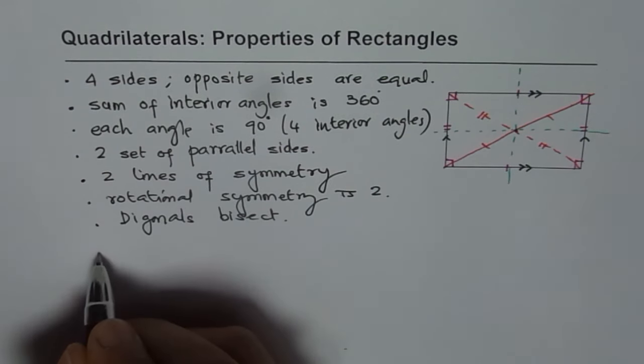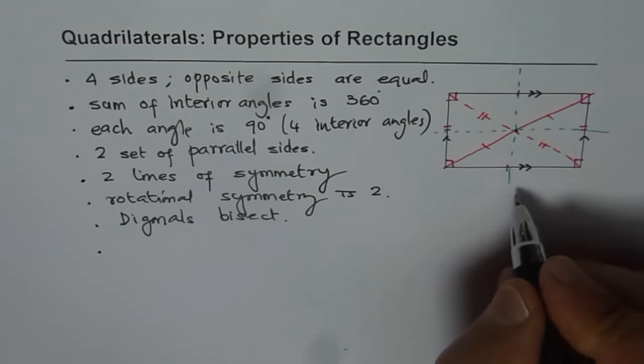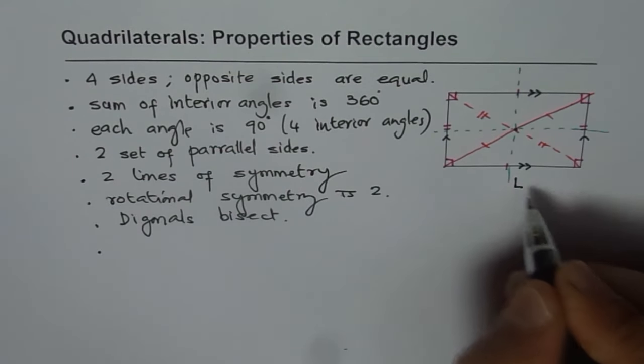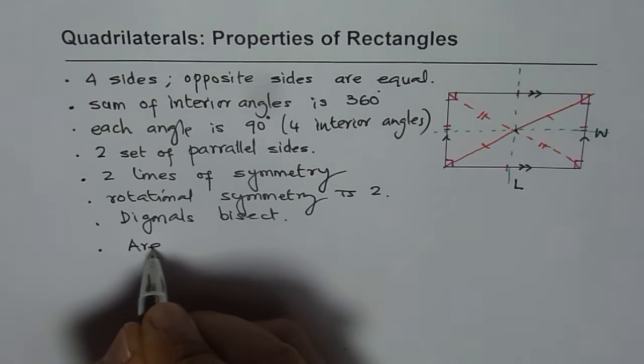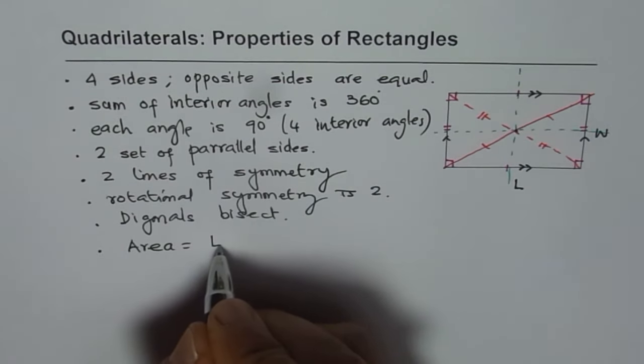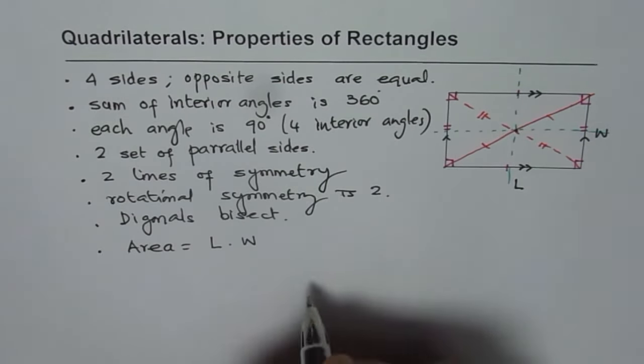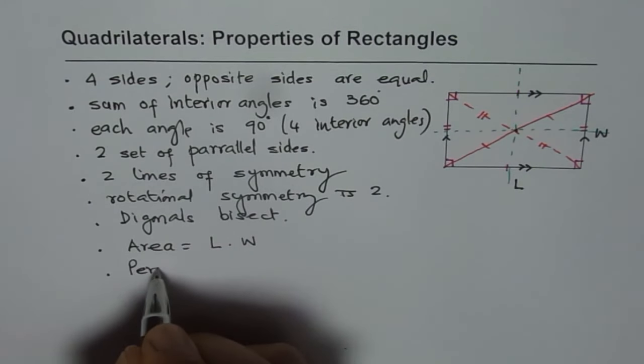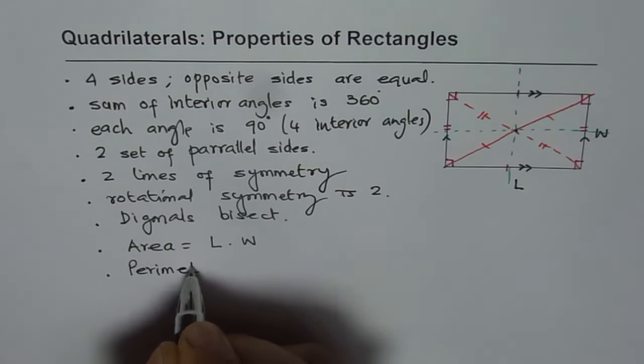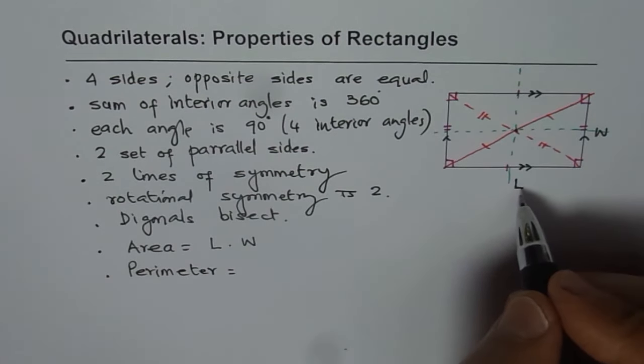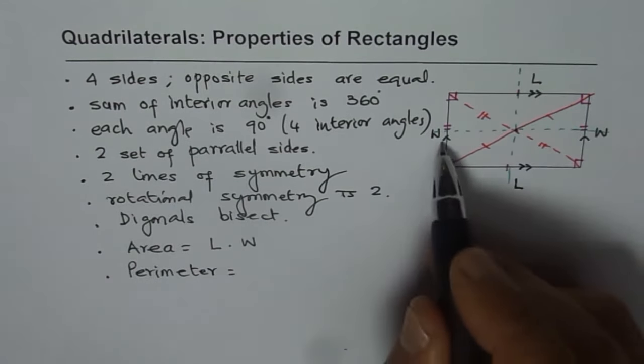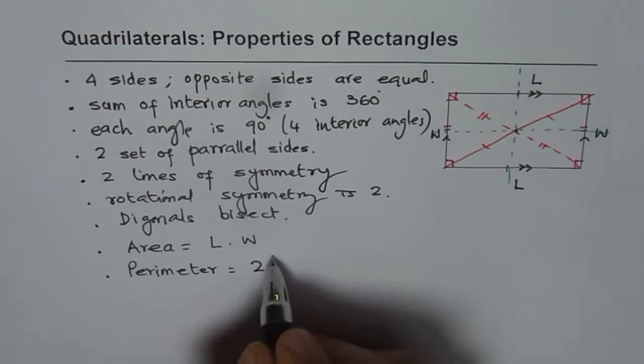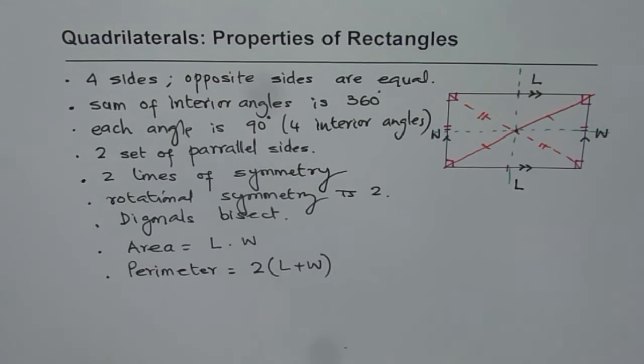Let's look into some formulas we will be using with rectangles. Let us say that the length is L and W is the width of a rectangle. In that case, what is the area? Area is length times width. And how about the perimeter? Perimeter is sum of sides. The opposite lengths will be equal, opposite widths will be equal. So there are two lengths and two widths. We can say twice length plus width. So that is the formula for the perimeter of a rectangle.